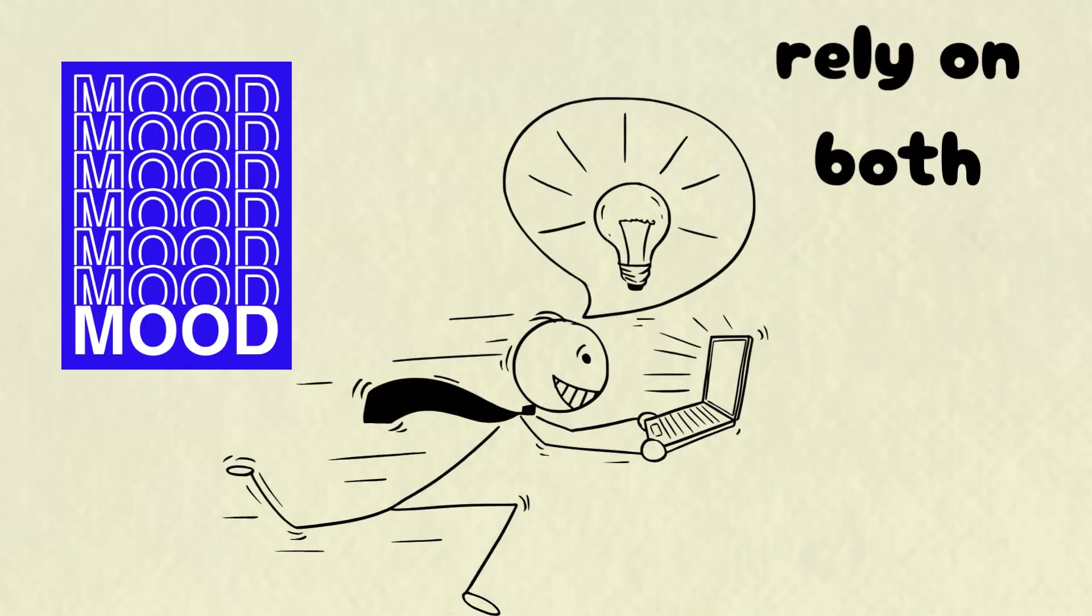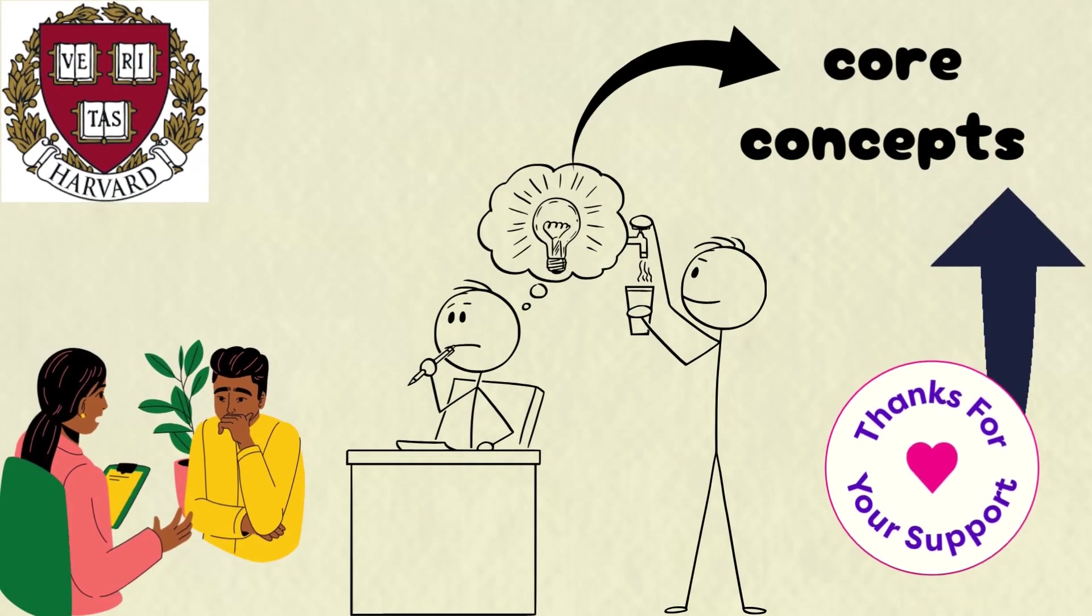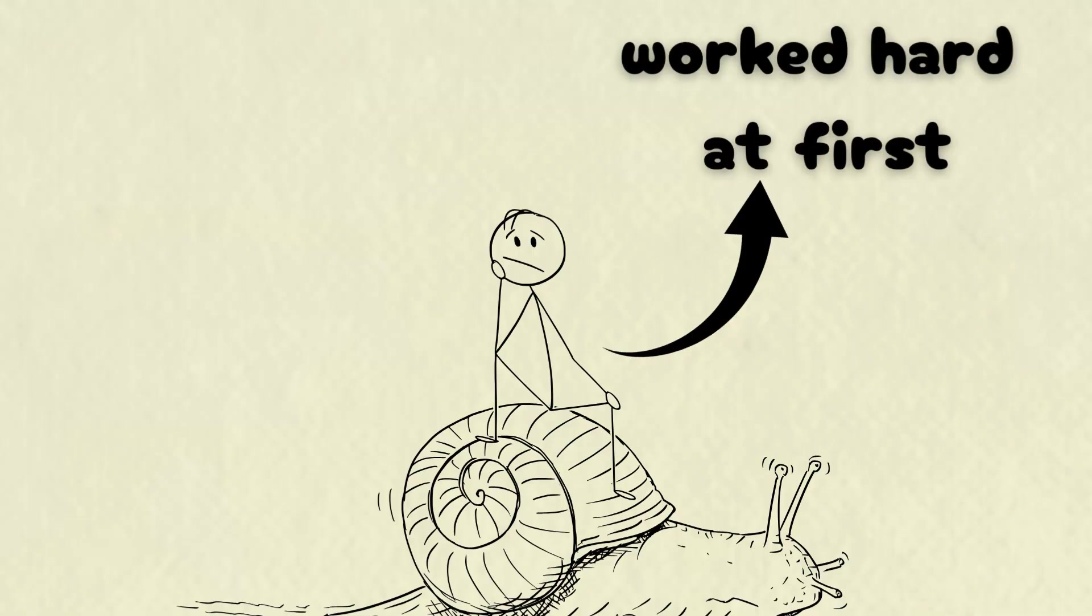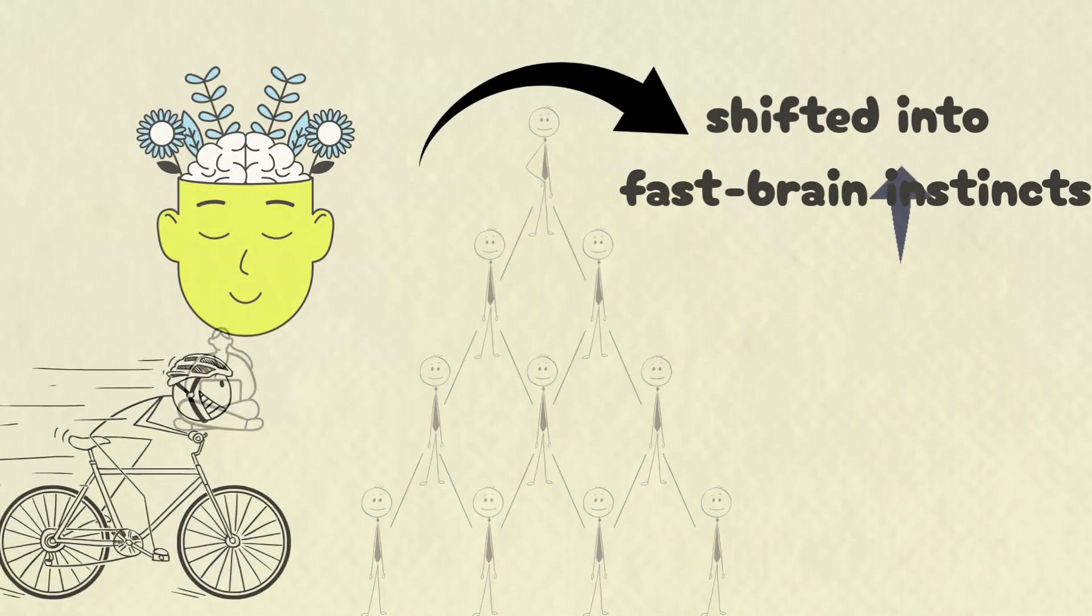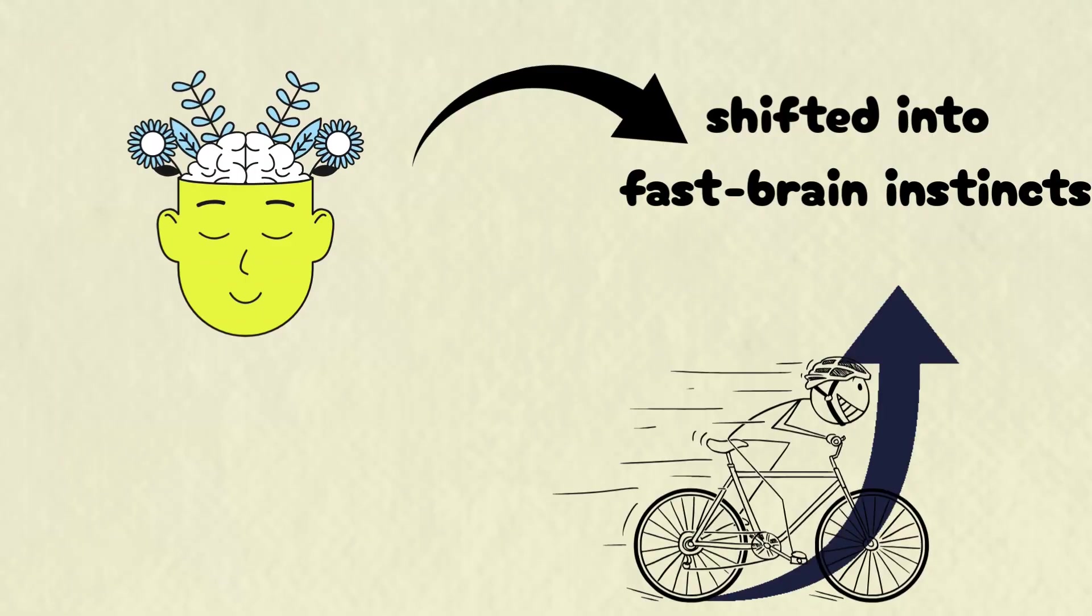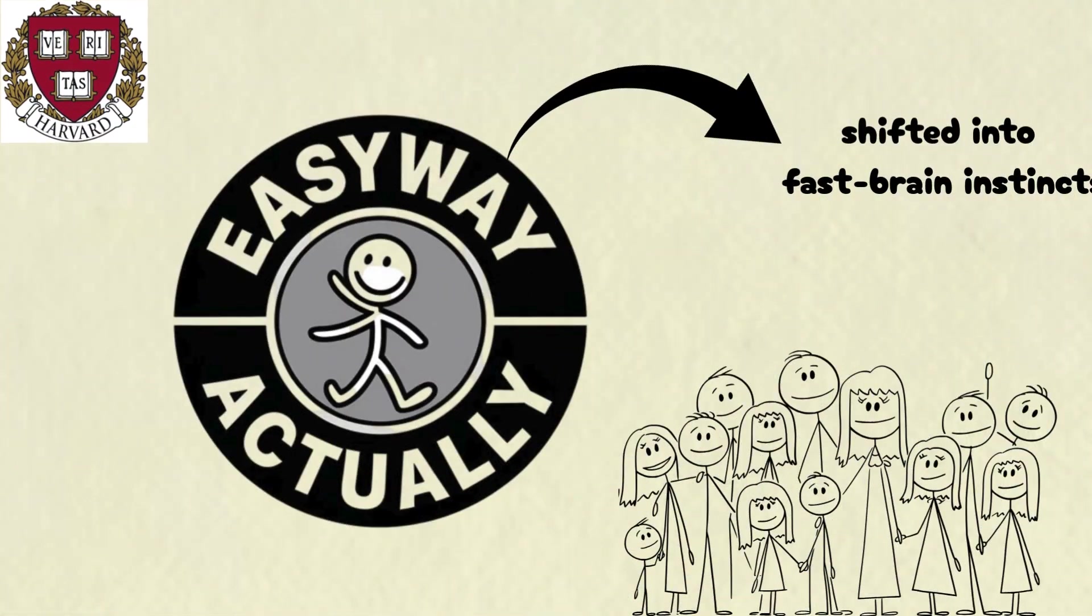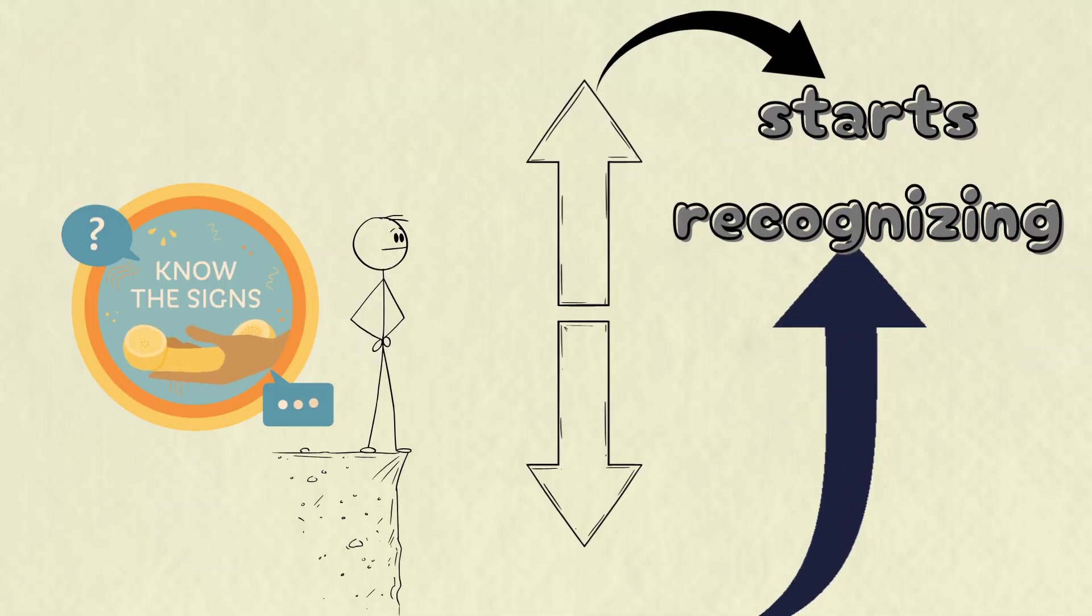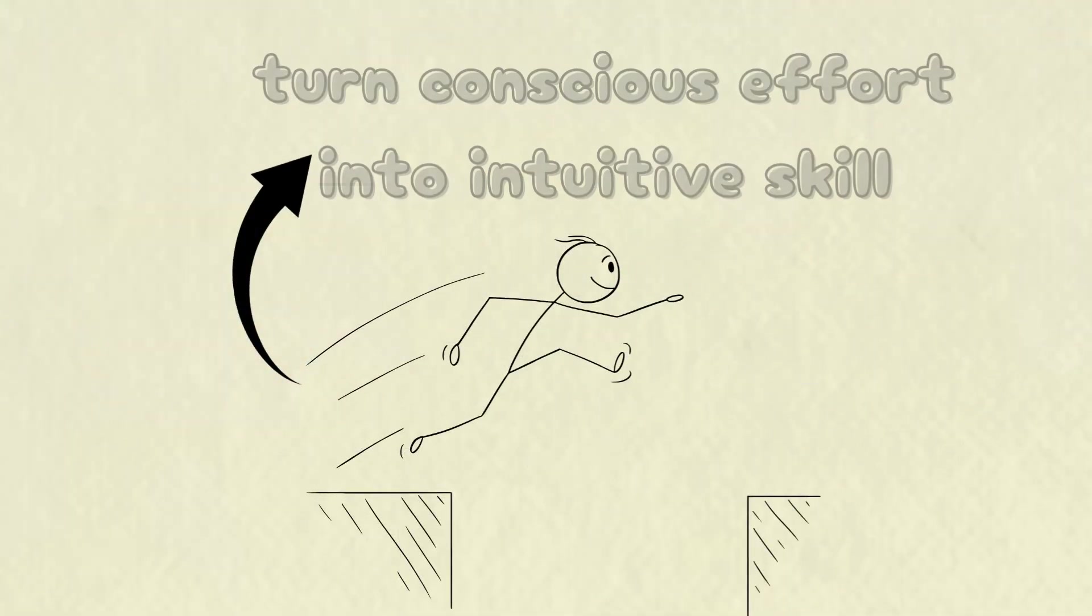Great math learners rely on both. They've practiced so many core concepts that solving problems feels effortless. Their slow brain worked hard at first, but with enough repetition, those efforts shifted into fast brain instincts. The goal? Practice until your brain stops struggling and starts recognizing. That's how you turn conscious effort into intuitive skill.